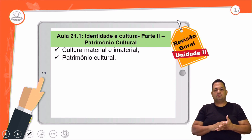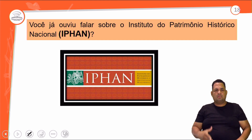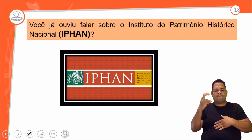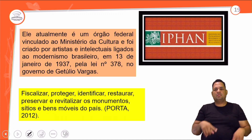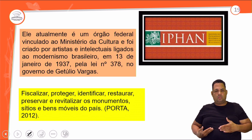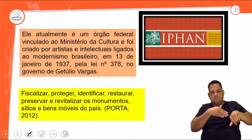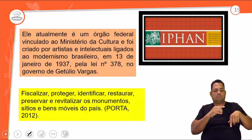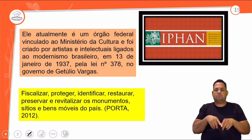Na aula 21, falamos sobre cultura material, imaterial e patrimônio cultural. Trouxemos o IPHAN, que tem o objetivo de resguardar tanto a cultura material quanto a imaterial no nosso país. É um órgão federal vinculado ao Ministério da Cultura, criado por artistas intelectuais ligados ao modernismo no governo Getúlio Vargas. Tem o objetivo de fiscalizar, proteger, identificar, restaurar, preservar e revitalizar bens imóveis e móveis. Cultura material são objetos tangíveis: artesanato, monumentos históricos, construções. Imaterial são as danças, práticas, ritos, mitos e lendas.